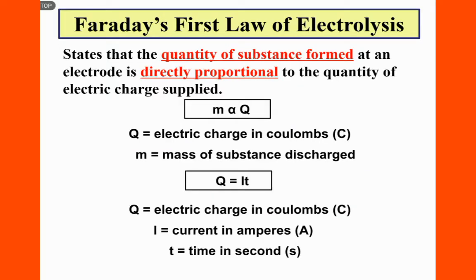Faraday's first law of electrolysis states that the quantity of substance formed at the electrode is directly proportional to the quantity of electric charge supplied. The mass of the substance discharged, M, is proportional to the charge Q.